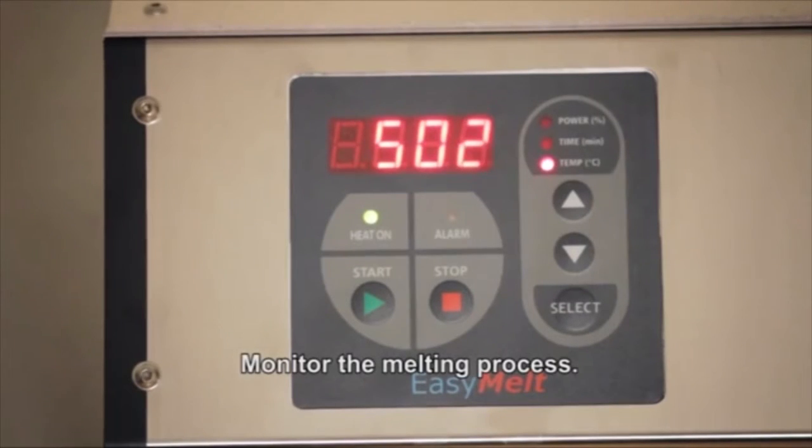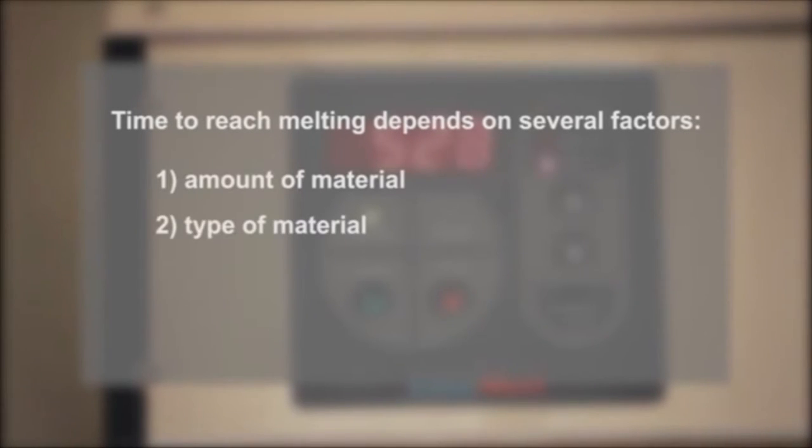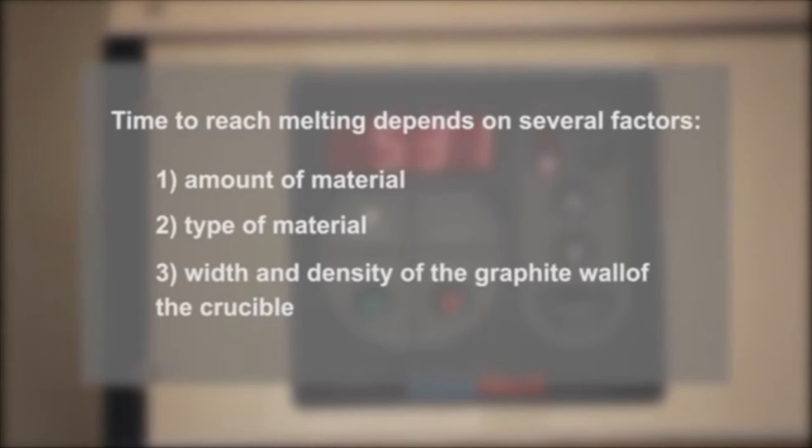Monitor the melting process. The time to reach an acceptable melting point depends on several factors: amount of material, type of material, the graphite wall thickness and density of the crucible.